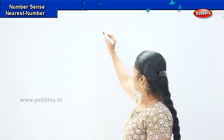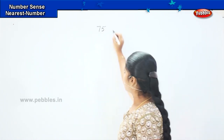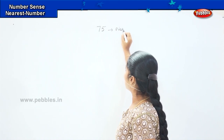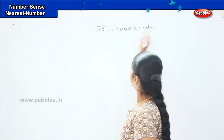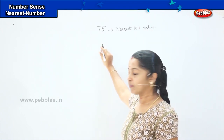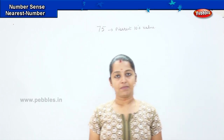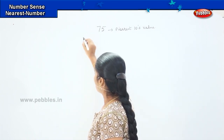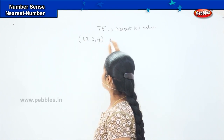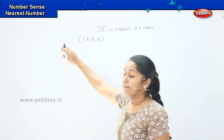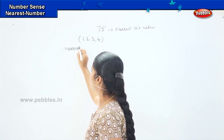For example, if I write the number 75 and I want to know which is the nearest tens value — there is an important rule to keep in mind. Whenever a number ends in 1, 2, 3, or 4, we will convert it to the nearest zero, that is, the lower tens value.